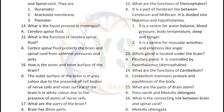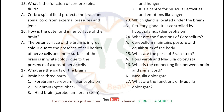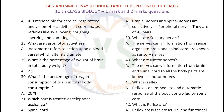What are the functions of cerebellum? Cerebellum maintains posture and equilibrium of the body. What are the parts of brain stem? Pons Varoli and medulla oblongata are the parts of brain stem. What is the connecting link between brain and spinal cord? Medulla oblongata. What are the functions of medulla oblongata? Medulla oblongata is responsible for cardiac, respiratory and vasomotor activities. It coordinates reflexes like swallowing, coughing, sneezing and vomiting. What are vasomotor activities? Vasomotor refers to action upon a blood vessel which alters its diameter.